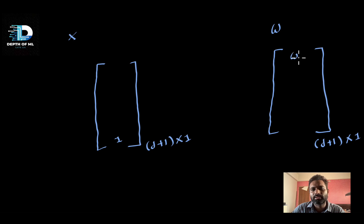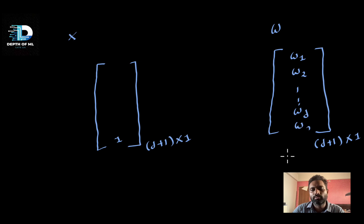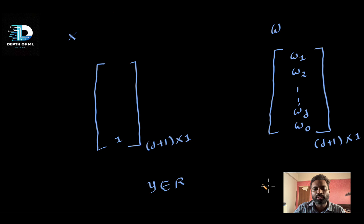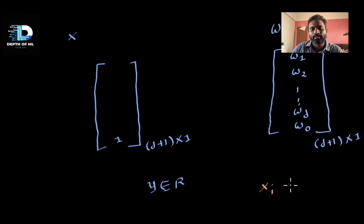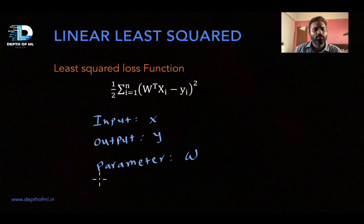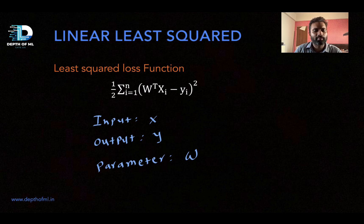Capital W is a parameter and also a column vector of d+1 rows and one column. Each entry in this parameter vector is a coefficient corresponding to each of the features: w_1 for the first feature, w_2 for the second, up to w_d for the dth feature, and w_0 as the bias. Y is a real value; we call the ith feature vector capital X_i and its ground truth small y_i.